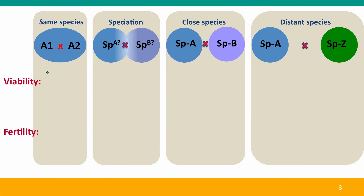Here's the diagram of different kinds of species that we're going to discuss over the next few lectures, and the particular issues that we'll address for each kind of hybrid. For hybrids between members of the same species — in particular inbred strains of the same species — their viability is not just as good as the parents, it's actually better than the parents. And their fertility can also be higher than their inbred strain parents.